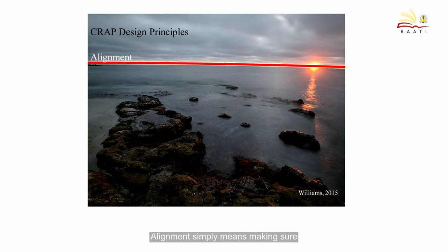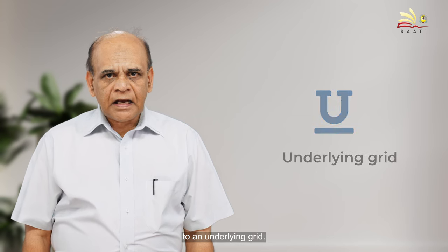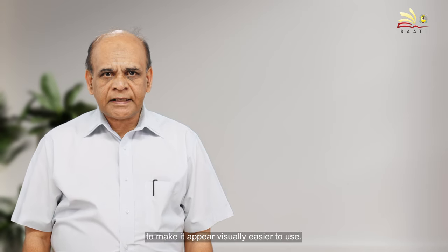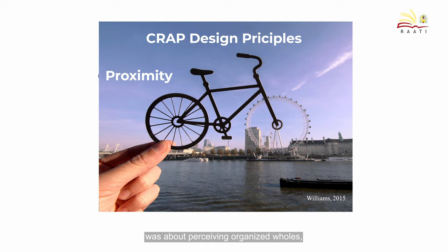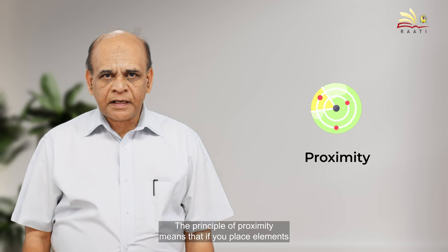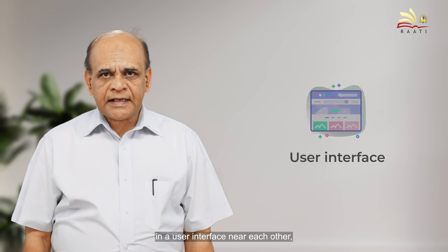Alignment means making sure that all elements of a design line up horizontally and vertically, best achieved by designing the interface to an underlying grid. Alignment is probably the most dramatic visual treatment you can apply to a design to make it appear visually easier to use. The Proximity principle, derived from the Gestalt school of psychology, emphasizes that visual perception is about perceiving organized wholes, not just isolated objects — meaning elements placed near each other in a user interface will be perceived as related.